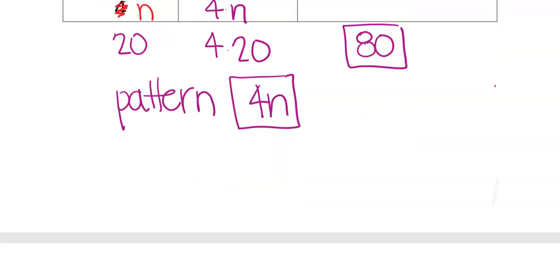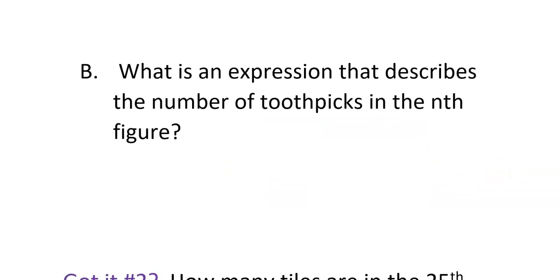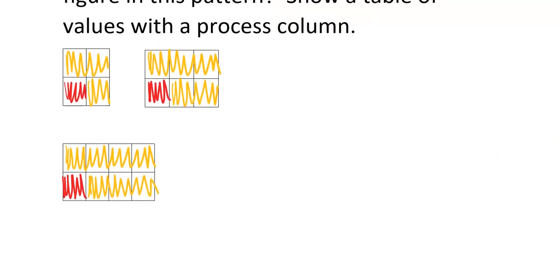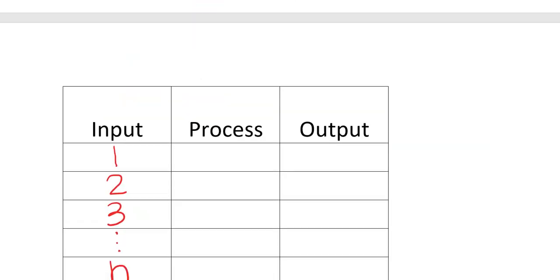The expression is 4n, so we can find any member of the sequence. Got It question number two: how many tiles are in the 25th figure? Show a table of values with a process column. Looking at the figures: in the first one there are four tiles, in the second there are six, and in the third there are eight. We want to find the pattern for the nth one.